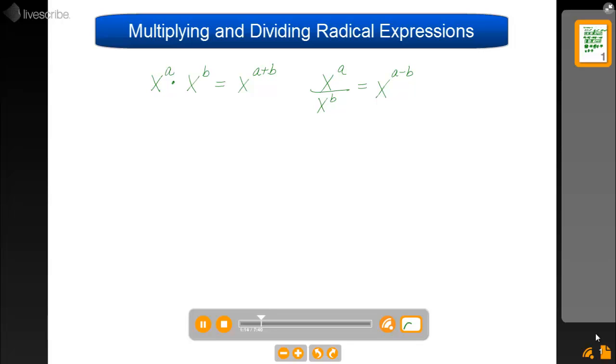And then the last exponent rule is if you have something with an exponent, so I'll take x to the a, and you raise it to another exponent, you're actually going to multiply those two exponents for your simplified answer.